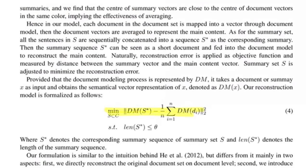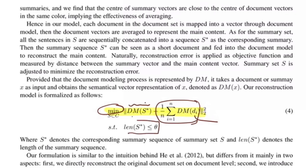The reconstruction error is a squared error between the vector representation of the summary sentences — represented as S* using the document model DM (paragraph vector representation) — and the average vector representation of each document Di. You want the set S* that minimizes the distance between both vectors, with summary length upper bounded by theta as a hyperparameter.